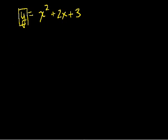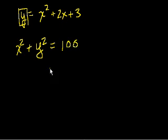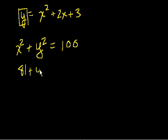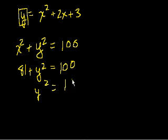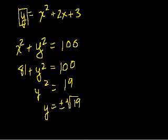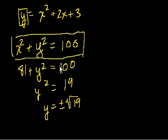On the other hand, what if I had x squared plus y squared is equal to 100? If I give you x equals 9, you put 9 in here, you get 81 plus y squared equals 100, then y squared equals 19, and y equals plus or minus the square root of 19. You could still solve for y, but this equation defines y implicitly.